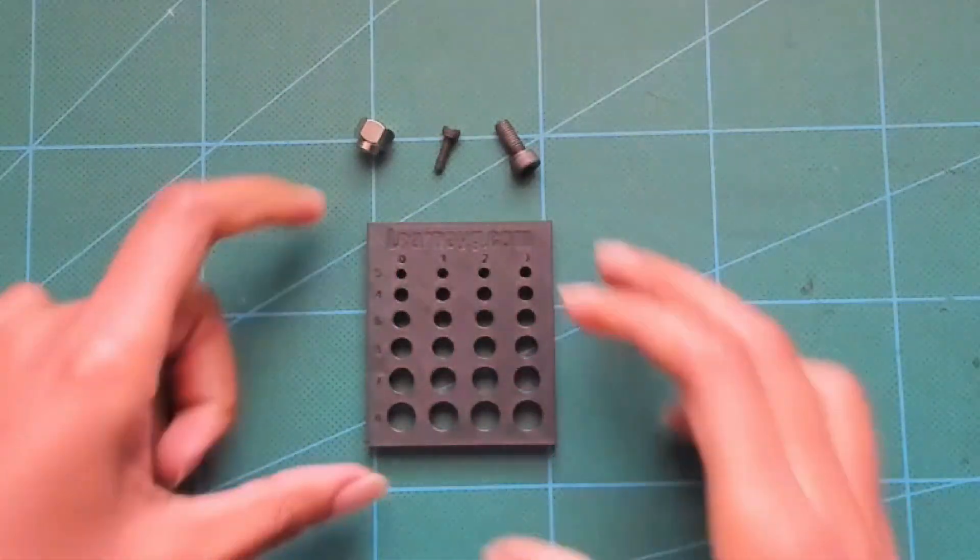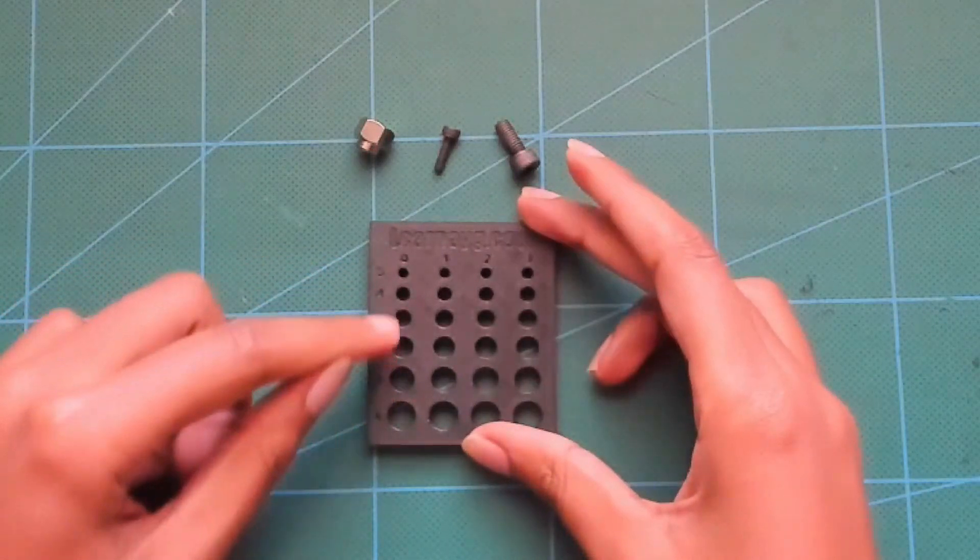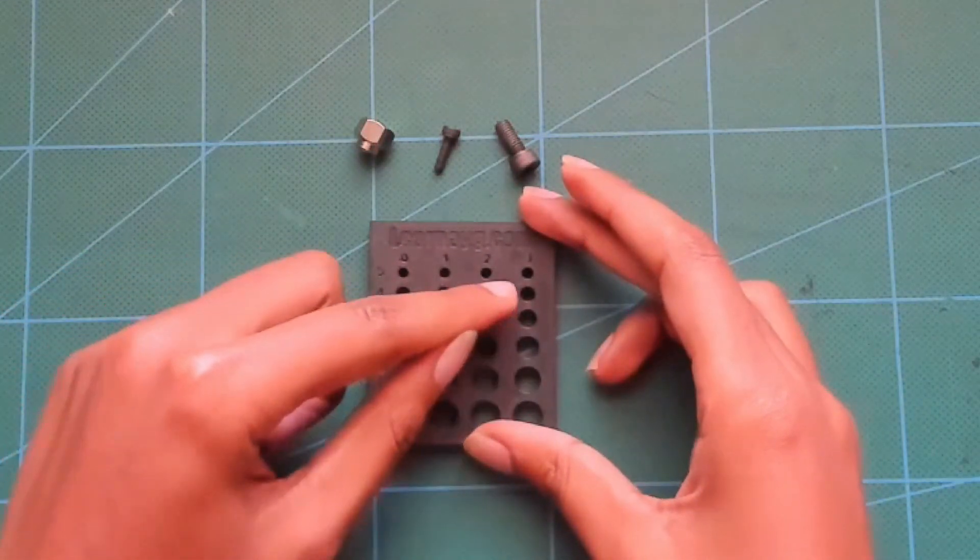This gauge has hole sizes from 3 to 8 millimeters with tolerances of 0.0, 0.1, 0.2, and 0.3.